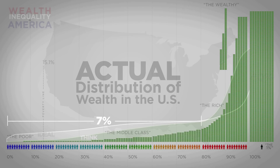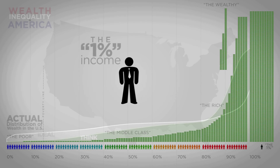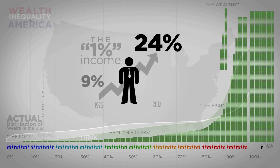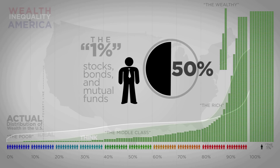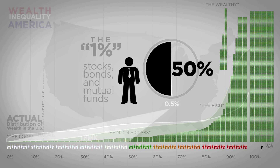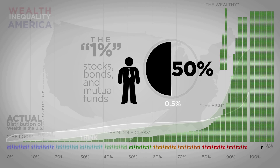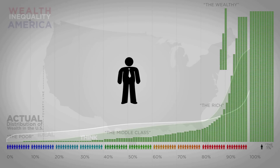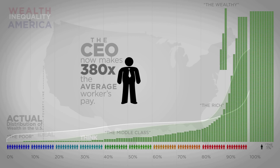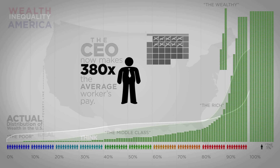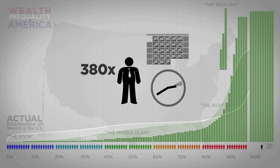This has only gotten worse in the last 20 to 30 years. While the richest 1% take home almost a quarter of the national income today, in 1976 they took home only 9% — meaning their share of income has nearly tripled in the last 30 years. The top 1% own half the country's stocks, bonds, and mutual funds. The bottom 50% own only half a percent of these investments — they aren't investing, they're just scraping by. Do you really believe the CEO is working 380 times harder than his average employee? The average worker needs to work more than a month to earn what the CEO makes in one hour.